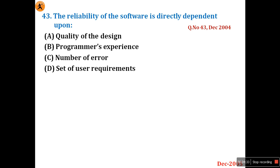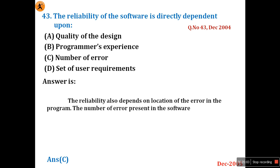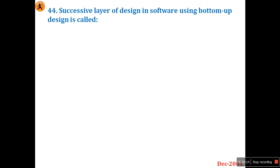Question 43: The reliability of software is directly dependent on — this same question was asked in December 2004, question 43. For those who are new, go to my previous videos. The answer is A — the number of errors present directly determines the reliability of the software.